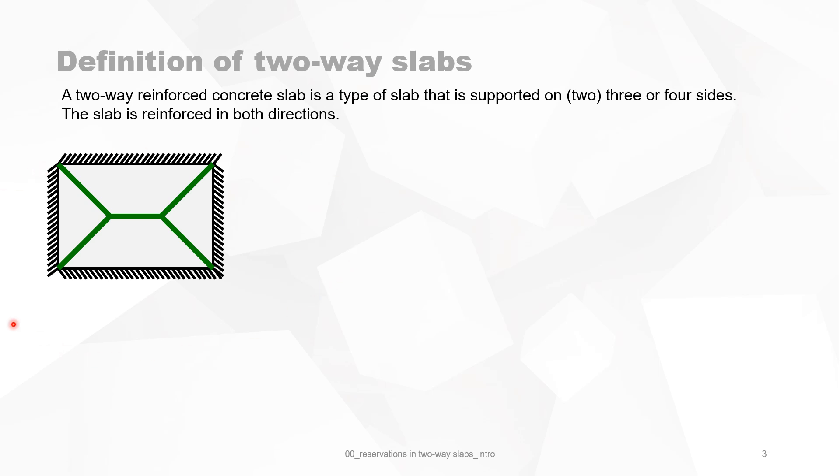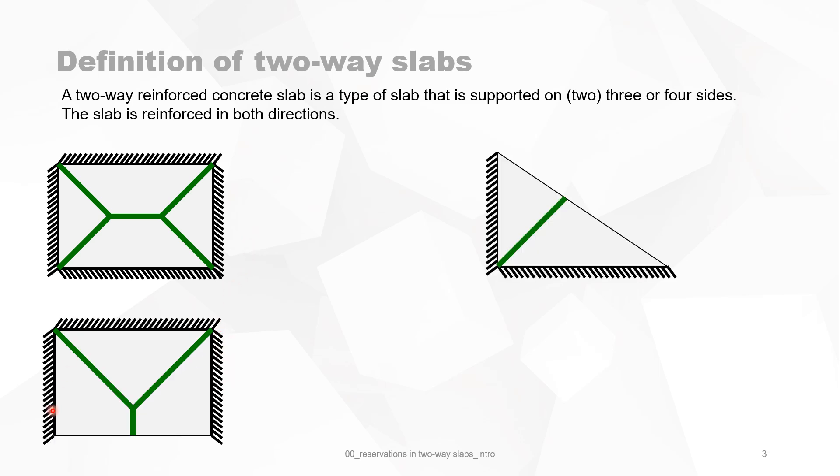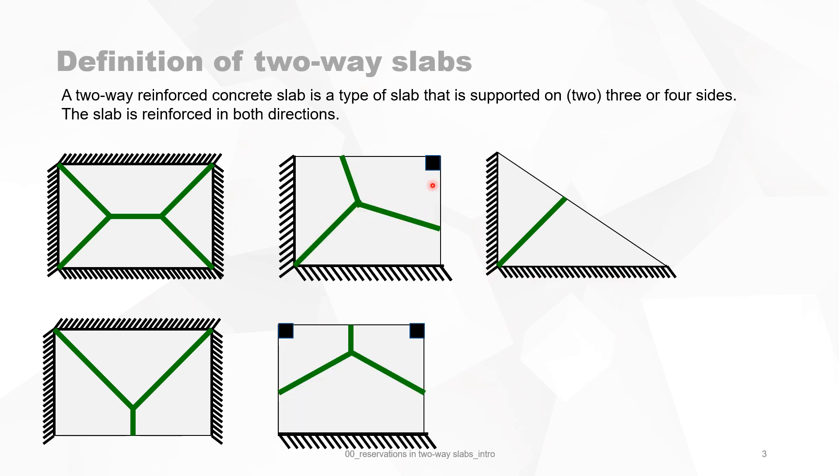A square slab is simply supported on all sides, but the width or one dimension of the slab is less than two times the smallest dimension. This is a slab supported on three sides or on two sides, or you can have also support by means of a column or two columns.